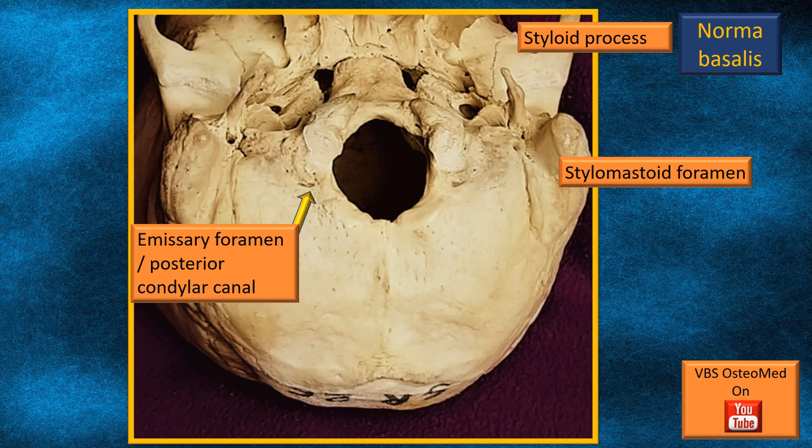The styloid process is a small horn-like projection projecting down from the lower part of the mastoid area. Right behind it, between the styloid and the mastoid, there is a foramen — the stylomastoid foramen. This is important because the facial nerve emerges from this foramen.